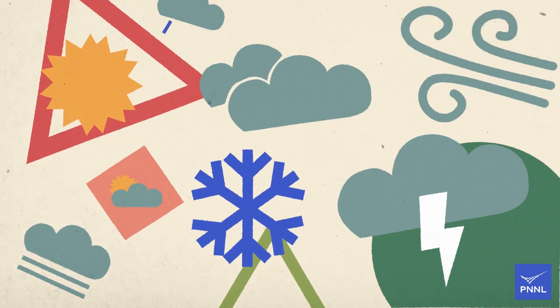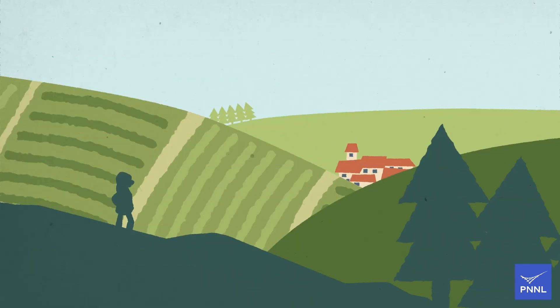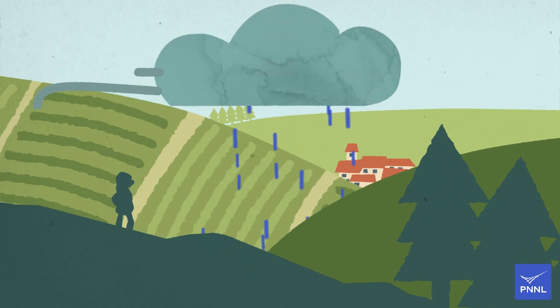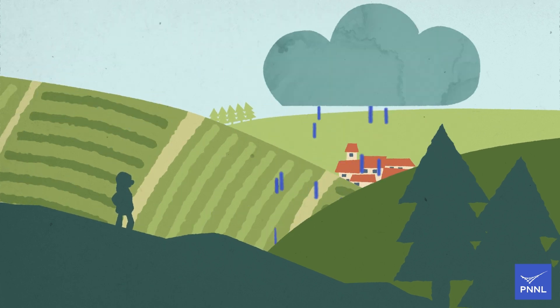Earth's climate is complex. Sometimes we see the forces of Earth's climate right before our eyes, like when air currents push atmospheric rivers and all their rain clouds over our homes.